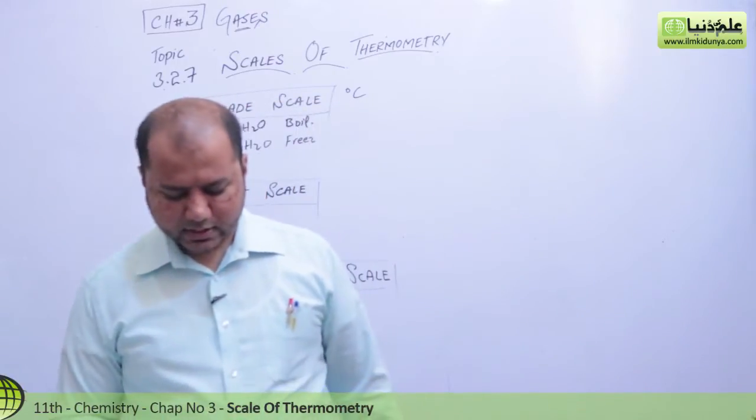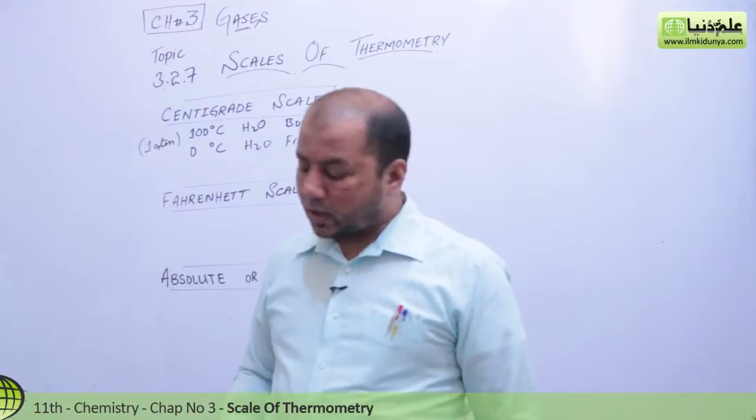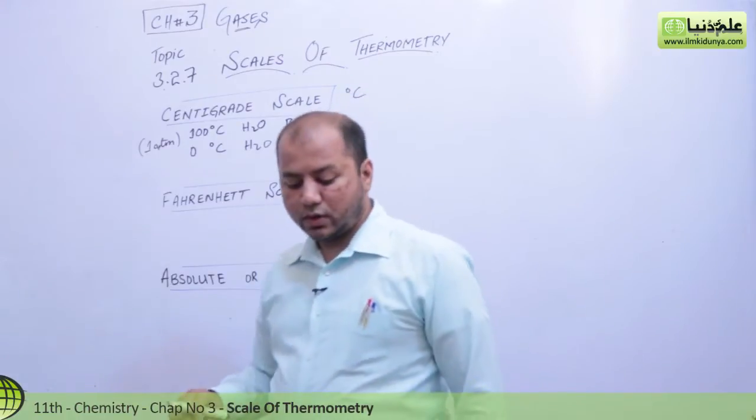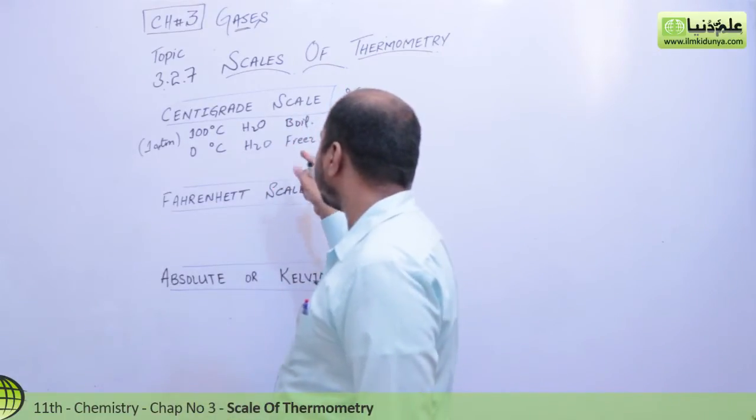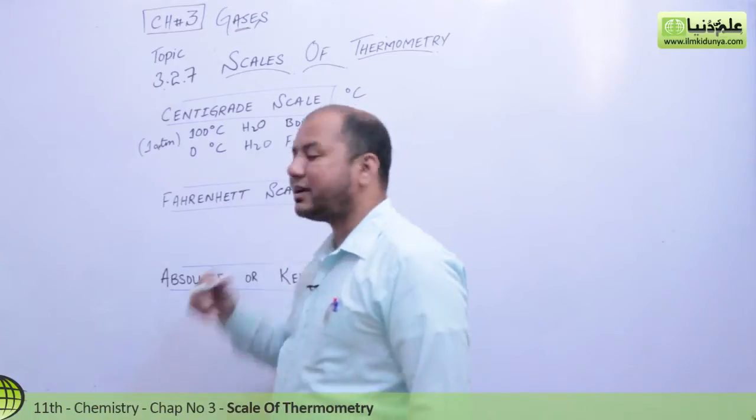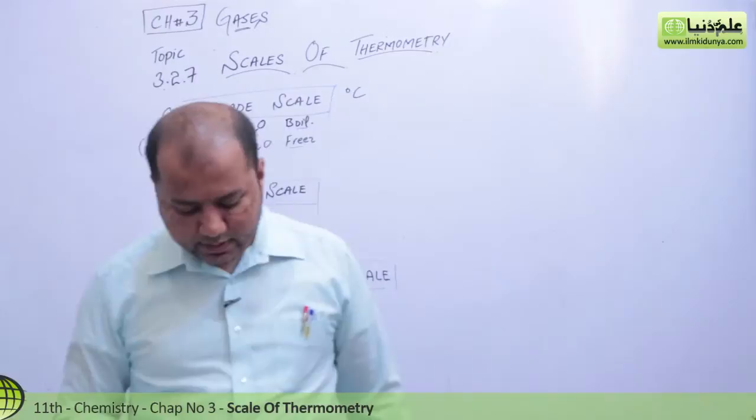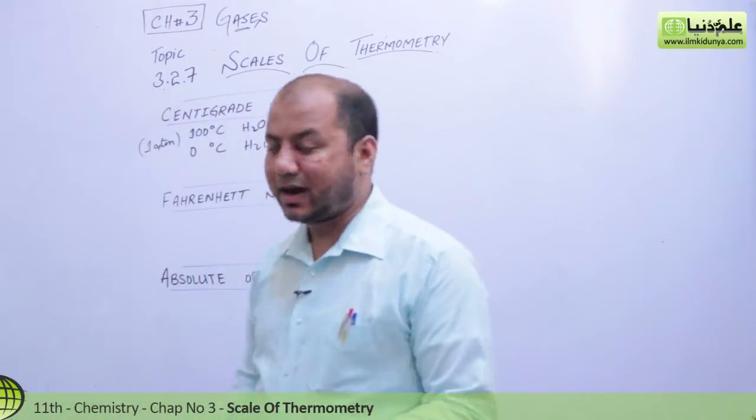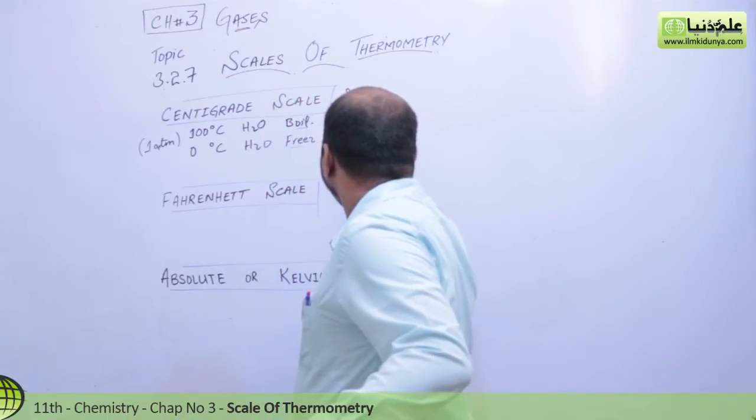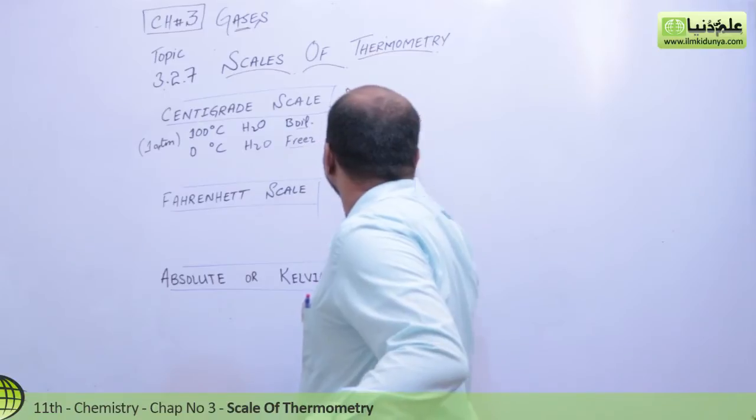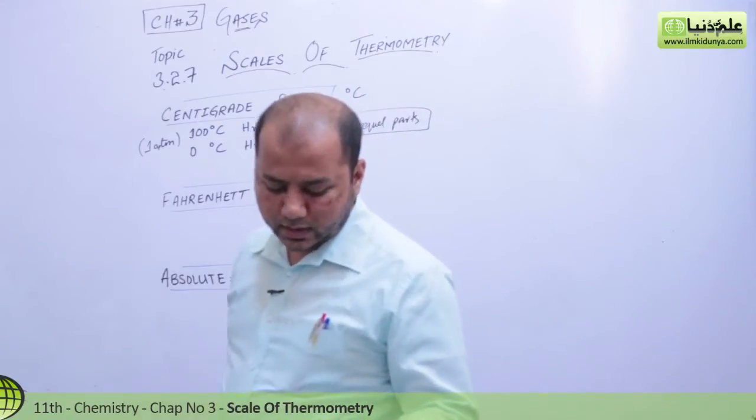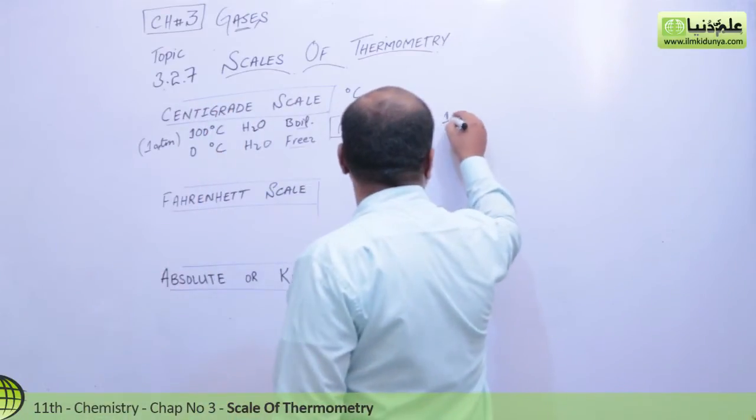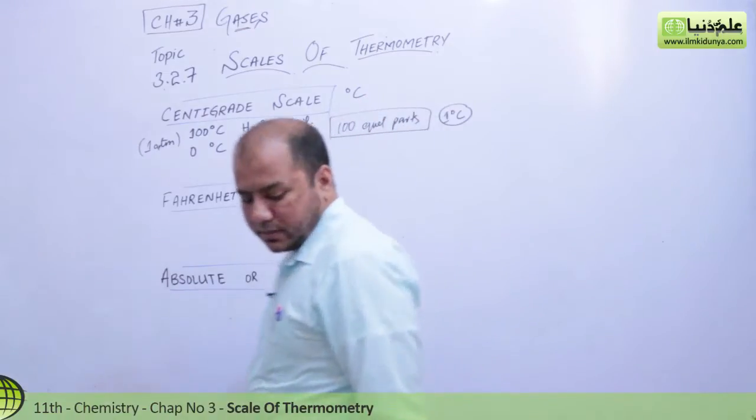In this scale, there are 100 units because we've used water as a source to make the temperature scale. The space between these temperature marks is divided into 100 equal parts, where one part equals one degree Celsius.